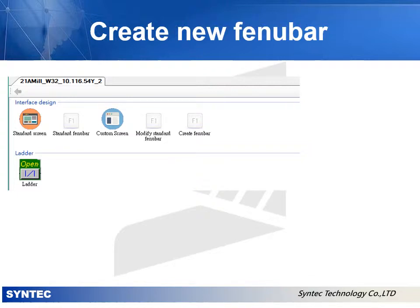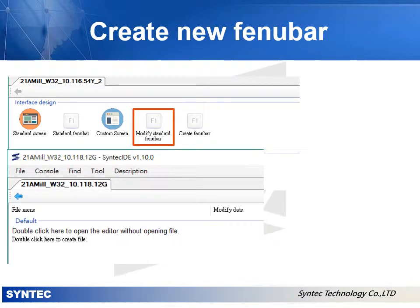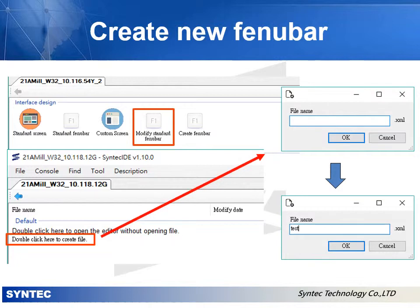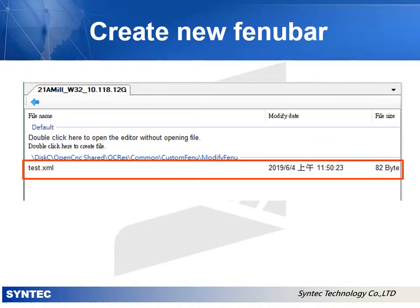Back in Syntec IDE, double-click the modify standard Fenubar icon, then double-click here to create the file. A dialog box for entering a file name will pop up. Press OK. The file list will show a new file which we just created and named for the test. Double-click this file to open EHMI to modify the Fenu.